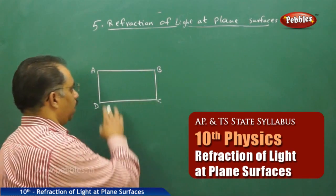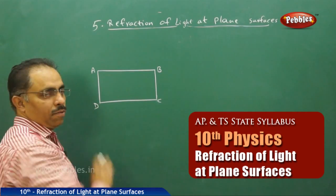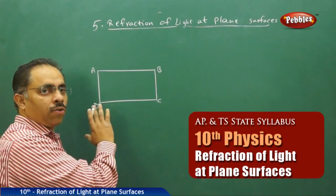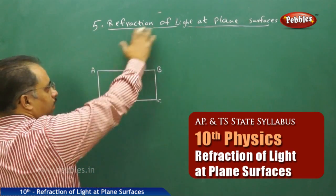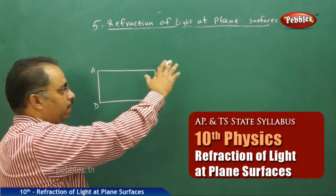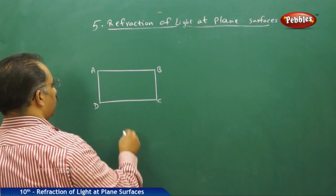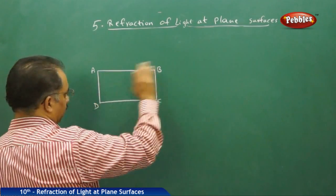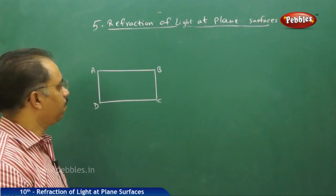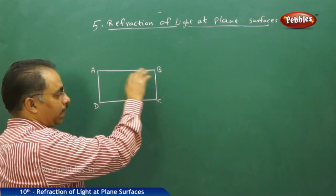Let us consider a rectangular glass block — a glass slab. We will place it on a paper and fix it to a drawing board. Assume this is the drawing board with a paper on it, and I am placing the glass slab over here. I will trace the glass slab and keep it aside. So ABCD is the boundary of the glass slab, with opposite sides parallel, forming a rectangle.